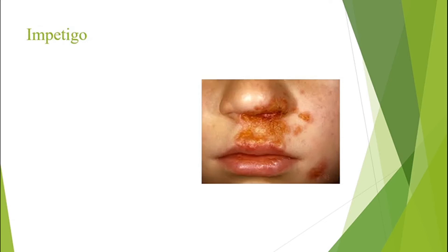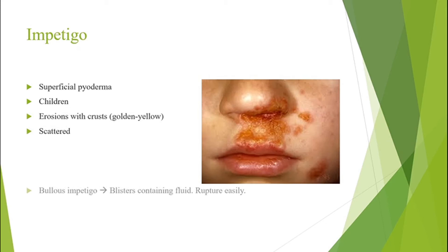Impetigo is a type of superficial pyoderma and the most common primary infection in children. It is often asymptomatic but can appear as erosions with gold-yellow crusts, usually scattered and discrete. Bullous impetigo presents as superficial blisters containing clear yellow or slightly turbid fluid; they rupture easily and are more common in intertriginous sites.